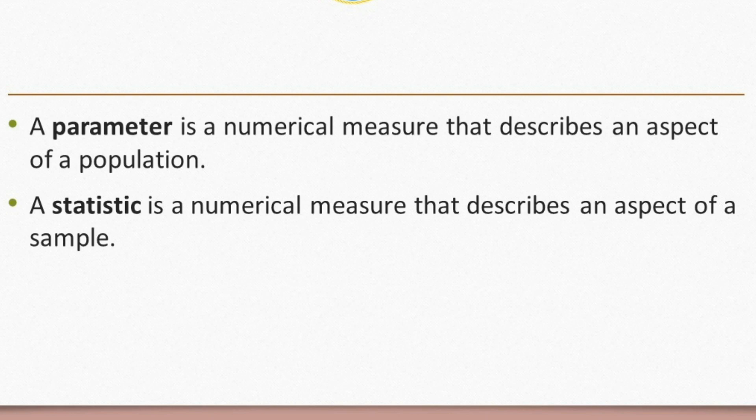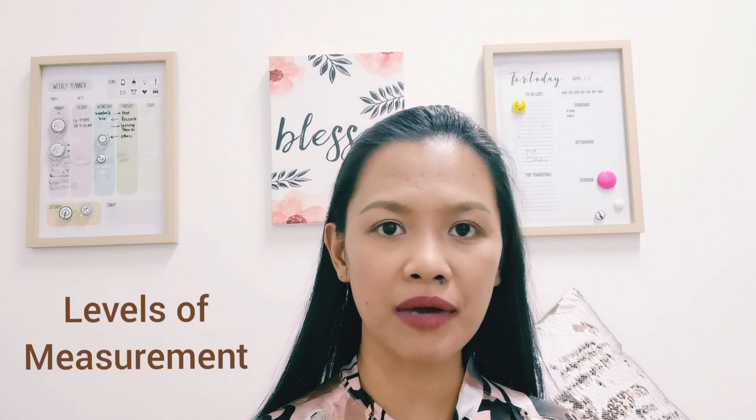If you collect data from the population, the numerical measure that you get is called a parameter. A parameter is a numerical measure that describes an aspect of a population. On the other hand, a statistic is a numerical measure that describes an aspect of a sample. For example, if I solve for the average grade of all third-year students, that average grade serves as the parameter. If I solve for the average grade of one section, which serves as a sample, the resulting value is considered a statistic. It is also important to note the levels of measurement of the variables.